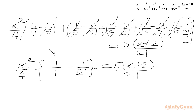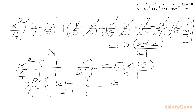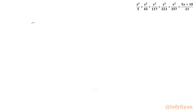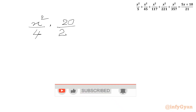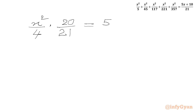Now 1 over 1 we can write as 21 over 21, so we get 21 minus 1 over 21, which is 20 over 21. So we have x squared over 4 times 20 over 21 equal to 5 times (x plus 2) over 21.